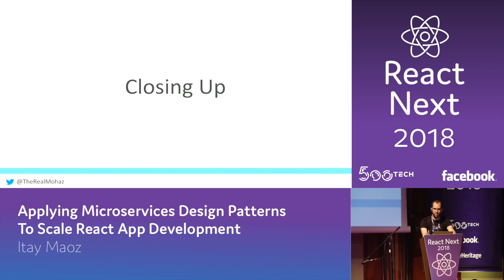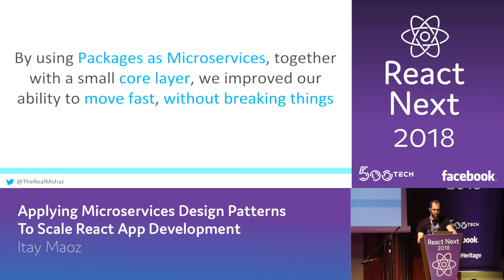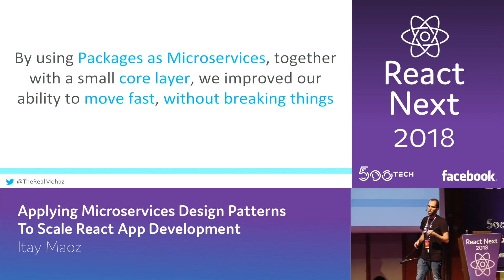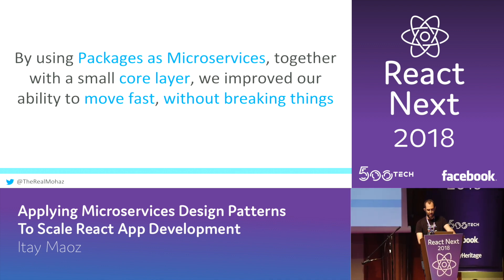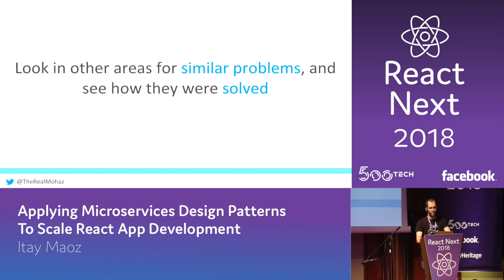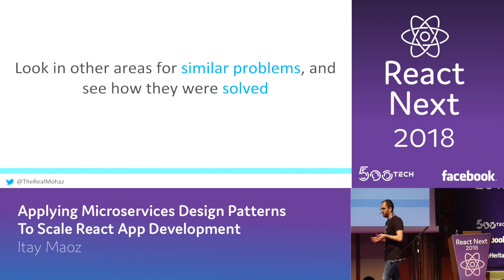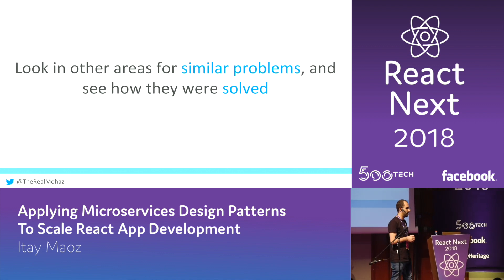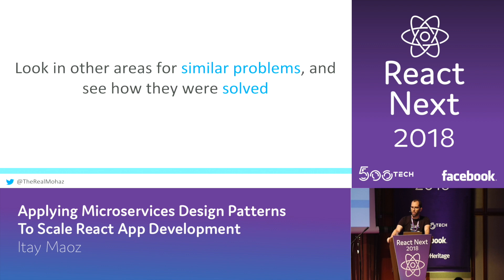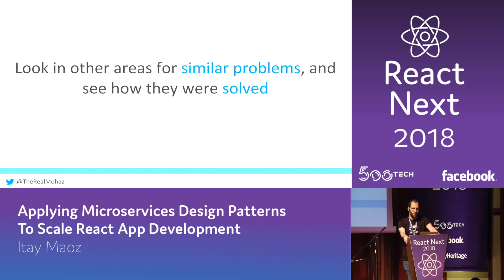To recap: we used packages as microservices together with a small core layer to let us go fast without breaking things when building an app using multiple teams. And one more point — to reach this architecture, we looked at a different area: back-end development. You'd be surprised how many similar problems exist between different areas, so I highly recommend looking around and seeing if you can learn from other areas. It worked really well for us.